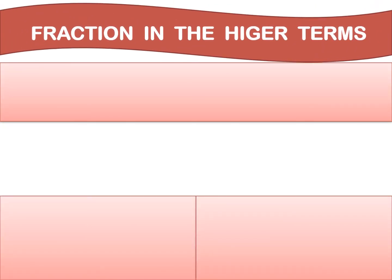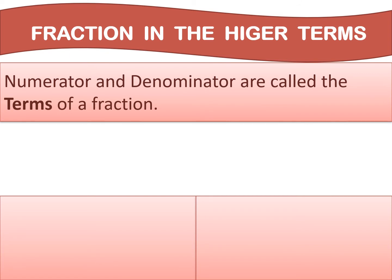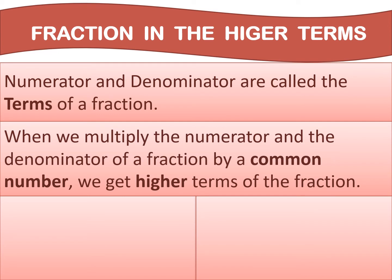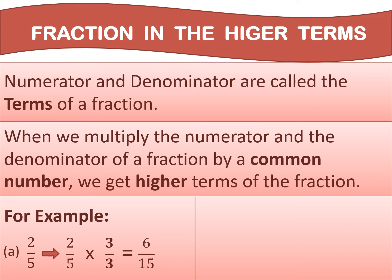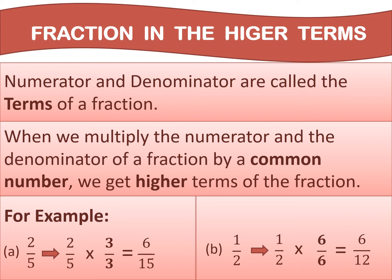The next topic is fraction in the higher terms. The numerator and denominator are called the terms of a fraction. When we multiply the numerator and denominator of a fraction by a common number, we get higher terms of the fraction. For example, 2 upon 5: if we take 3 as a common number, we get 6 upon 15. So, 6 upon 15 is a higher term of 2 upon 5. Let's solve one more example: 1 upon 2. If we take 6 as a common number, we get 6 upon 12. So, 6 upon 12 is a higher term of 1 upon 2.